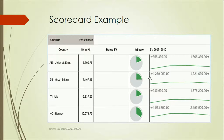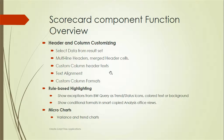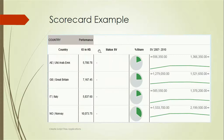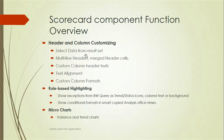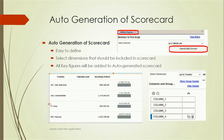The scorecard component offers header and column customization. We can select data from a result set, have multi-line headers, merge header cells, set custom column header text, align text, apply custom column formats, and use rule-based highlighting. Based on conditions, we can highlight data, color the text, change the background, show conditional formats, and change micro charts.